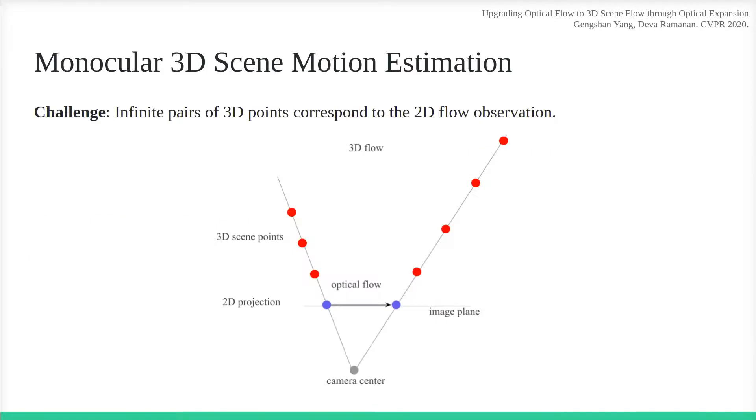Estimating the 3D motion using a monocular camera is challenging. A given 2D flow vector can be back-projected to infinite pairs of 3D points. Intuitively, a close-by object moving slowly will generate the same 2D flow as a faraway object moving fast.